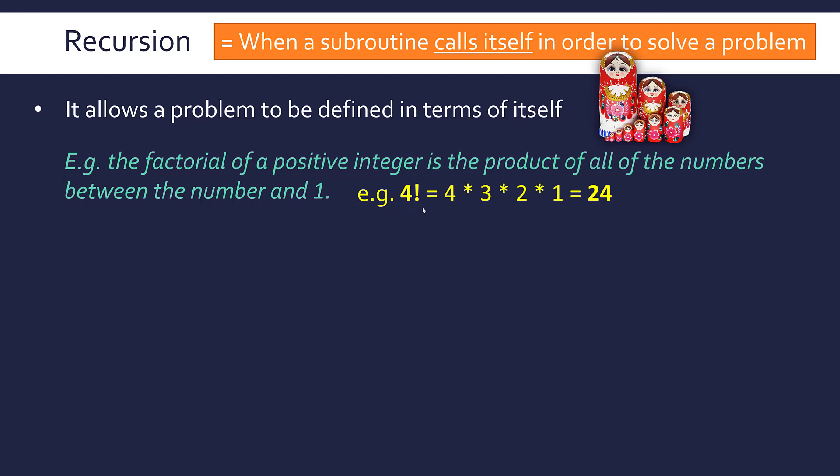I always find it a bit odd, but the symbol for factorial is an exclamation mark. Seems very needy to me, but there we go. So four factorial is the same as going four times three times two times one. And in this case, it's 24.